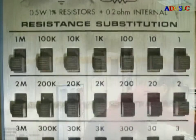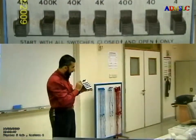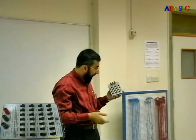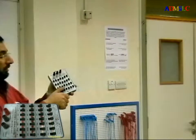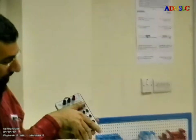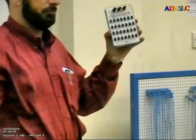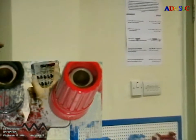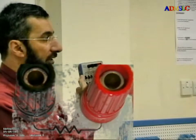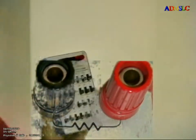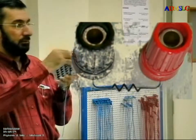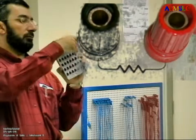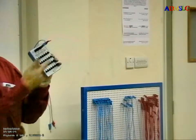Now look at this. This is a very amazing device — I really like it — this is the resistive box. First of all, we should make all buttons down. You can see here between the red and the middle input we have the sign of a resistor. When I connect this to the circuit, I should use this one and this one.